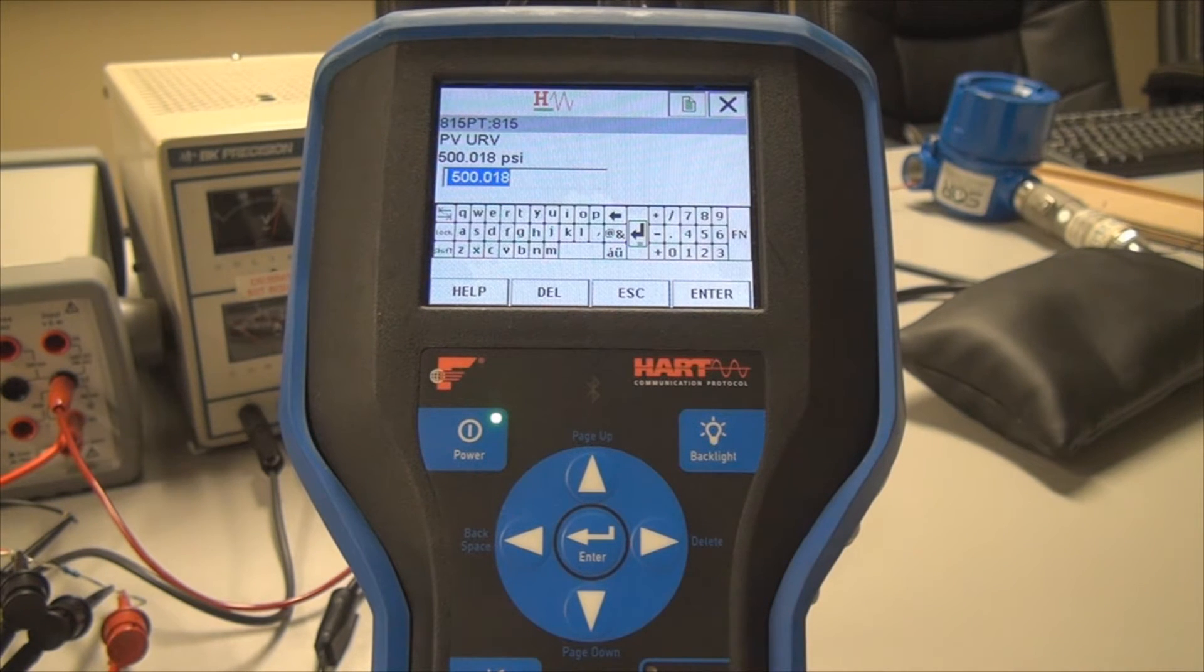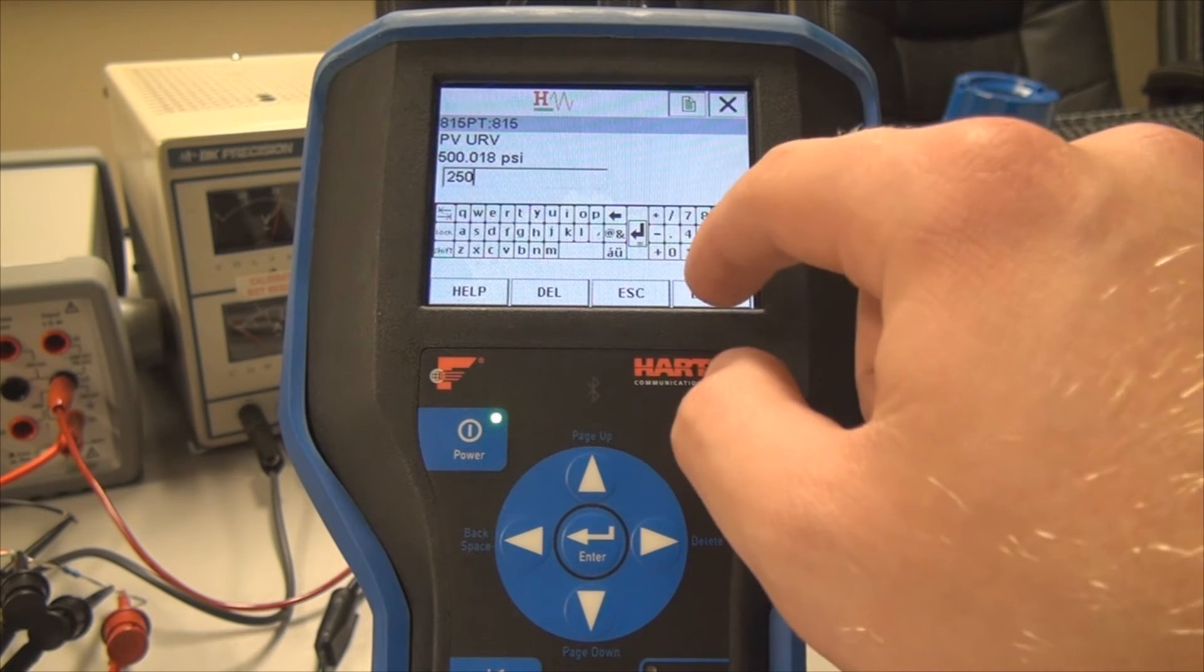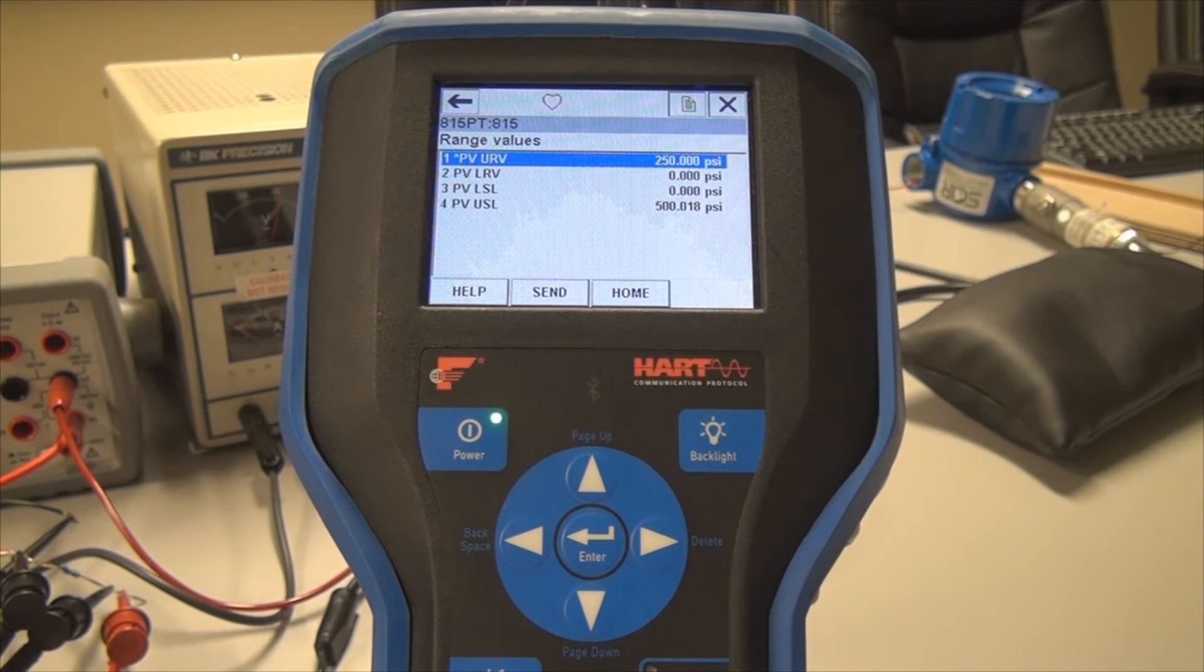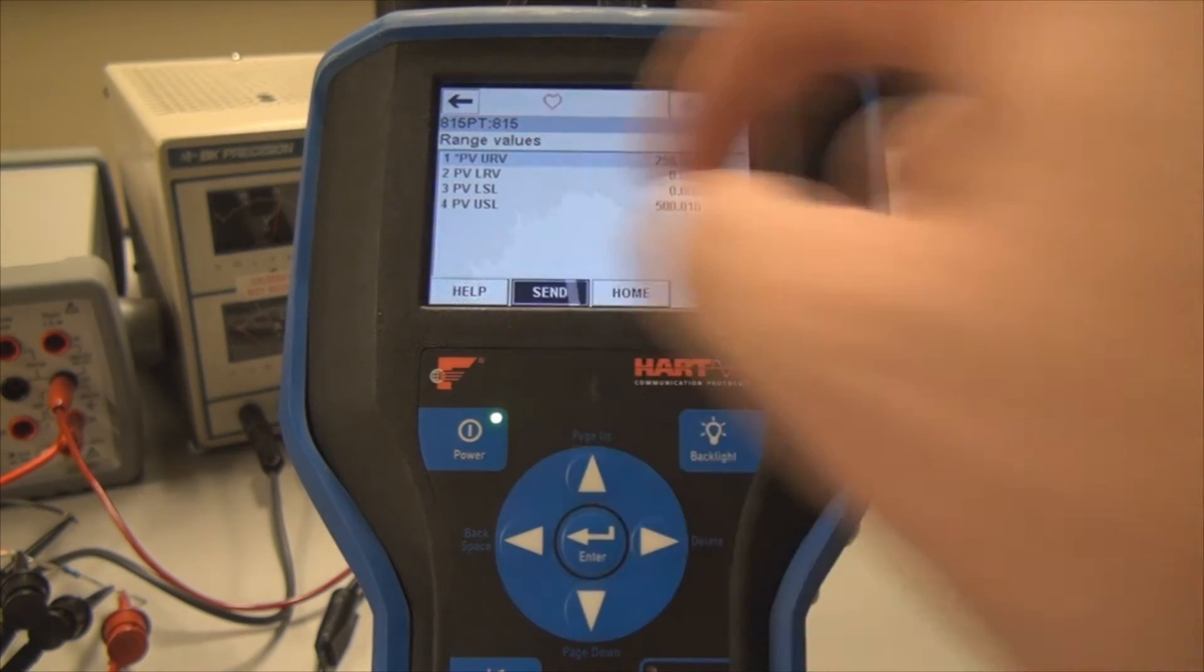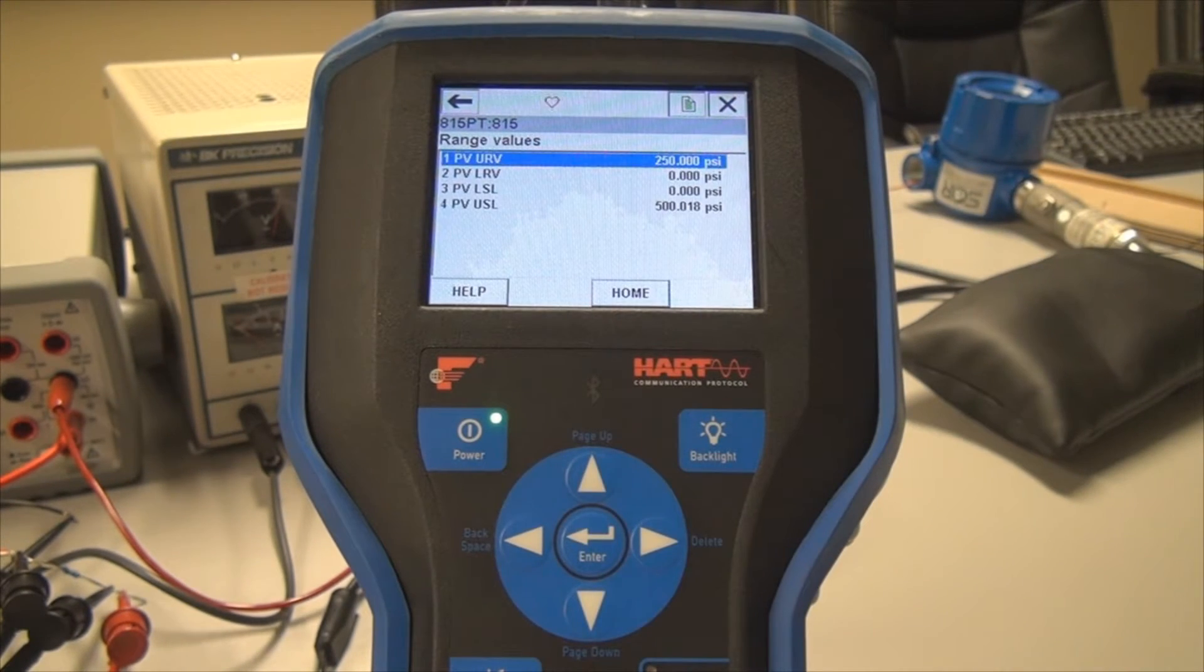and then here we can enter whatever we would like. So if we want to re-range this to have the high side be 250 psi, we're just going to hit 250 enter. And then you also have to make sure to hit the send button to actually apply that value. Now you've re-ranged the transmitter to zero to 250 psi. And then the same process for the lower range limit.